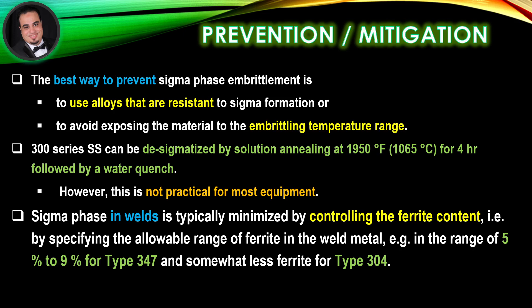The minimum ferrite content is needed to minimize hot short cracking during welding. Sigma phase in welds is typically minimized by controlling the ferrite content — by specifying the allowable range of ferrite in the weld metal, in the range of 5% to 9% for type 347, and somewhat less ferrite for type 304.